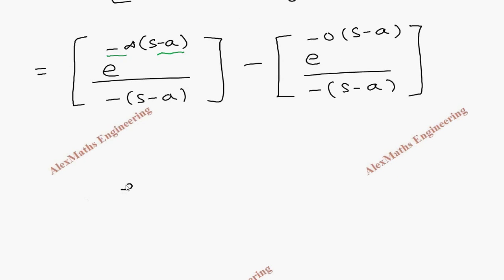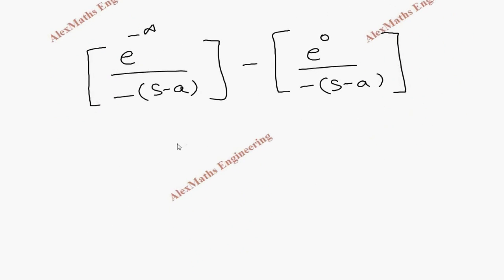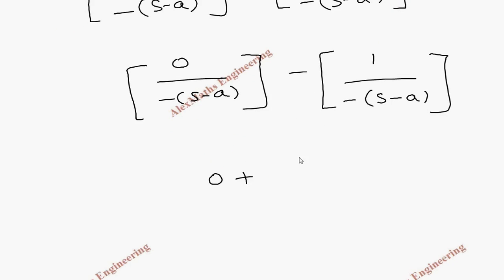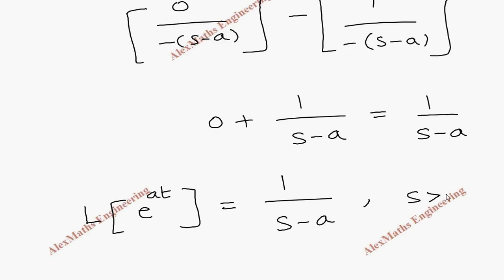For the upper limit term: s − a is positive so the exponent is −∞, and e^(−∞) equals 0, making the entire first term 0. For the lower limit: e^0 equals 1, so we get −1/(−(s−a)). The two negatives cancel, giving +1/(s − a). Therefore, the Laplace transform of e^(at) is 1/(s − a), where s is greater than a.